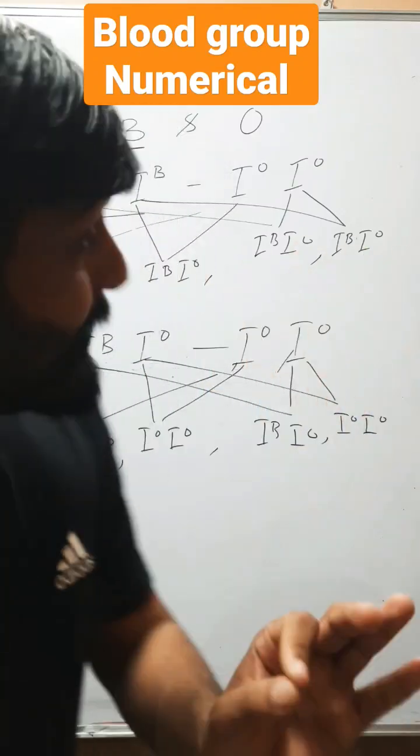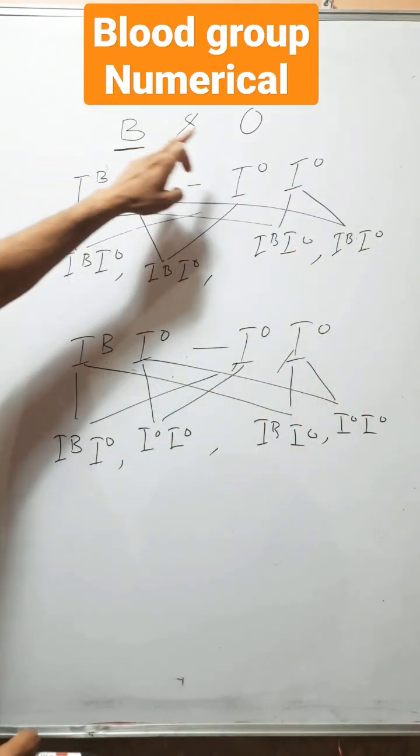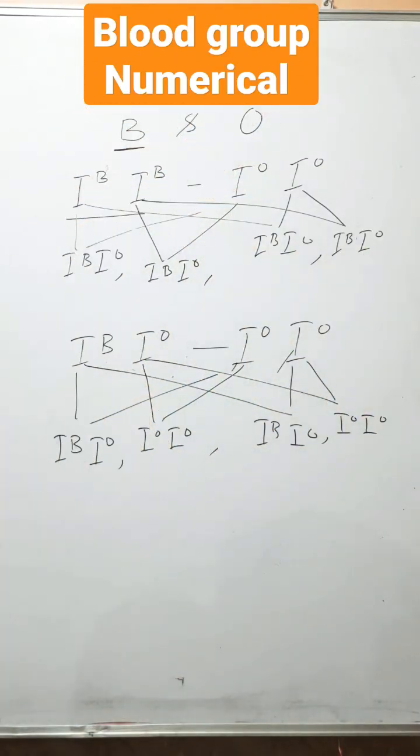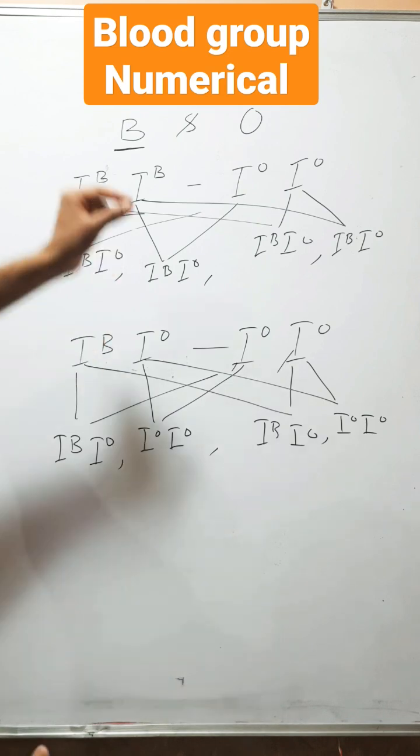In a couple, one has B blood group and another has O blood group. What will be the possibility of blood group in their children?